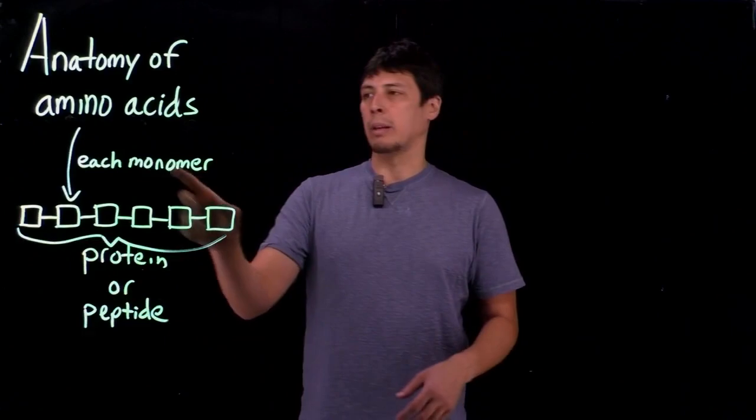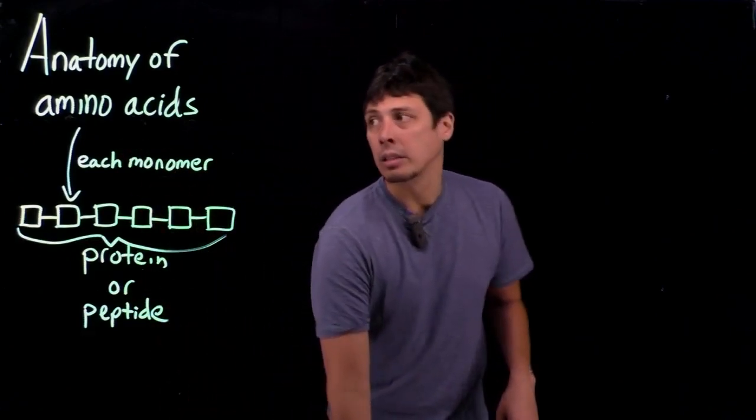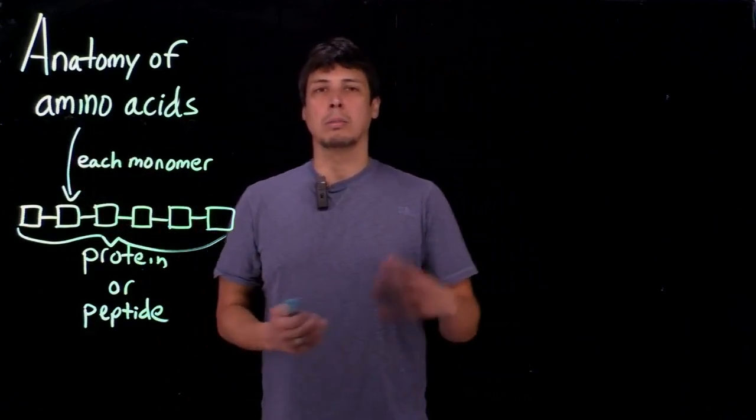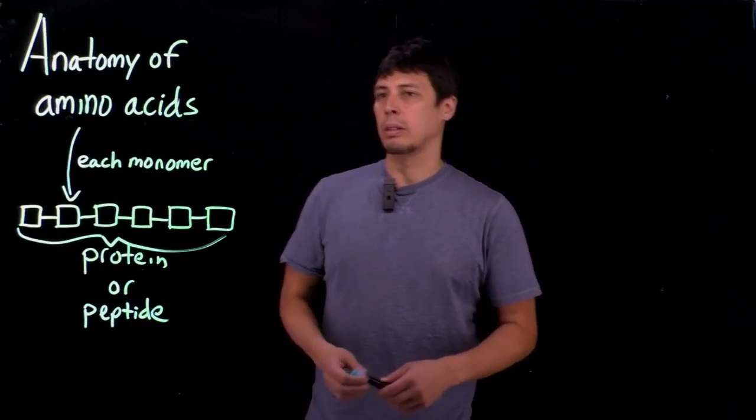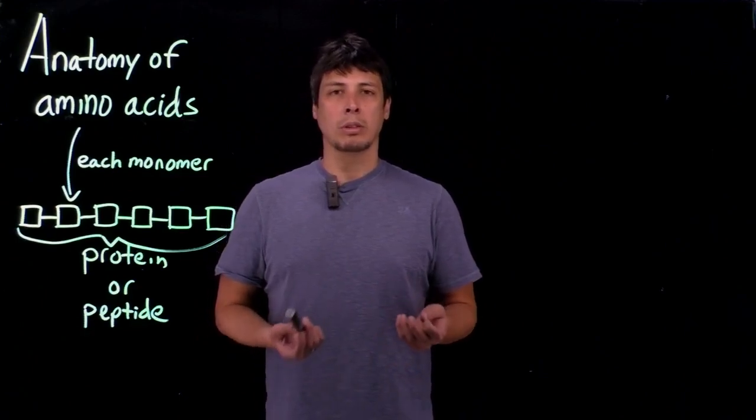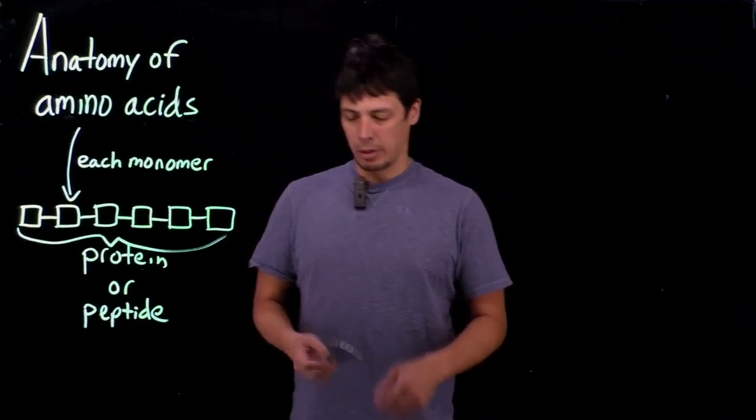And so these are polymers of a monomer, and that monomer is known as an amino acid. So amino acids are the monomers of proteins, they make up proteins. So one of the first things we're going to look at is the structure, the general structure of amino acids.